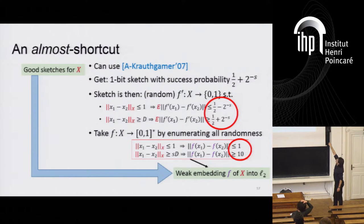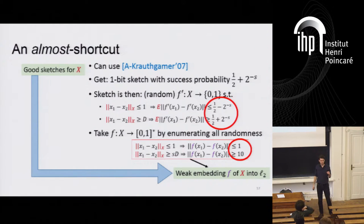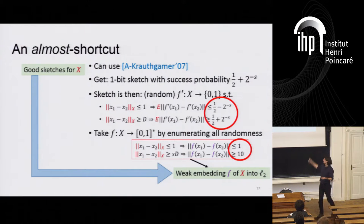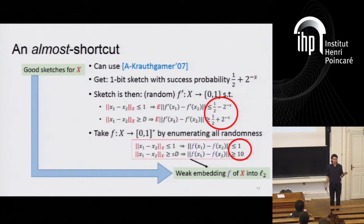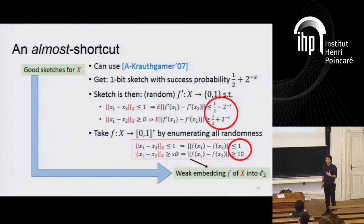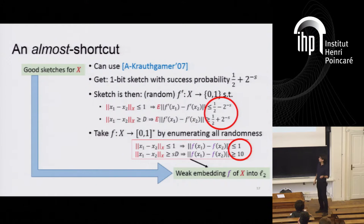This almost achieves what we want, except for these two quantities. In particular, here we want something like a gap of 10, but here we have a gap which is a factor very close to 1. So this reduction almost works, except that we really need some constant gap, because the rest of the proof uses triangle inequalities and we need at least a factor of 3. This doesn't quite work, which is intuitively why we use the direct sum theorem from the paper with Jerem and Mihaly Patraszko.